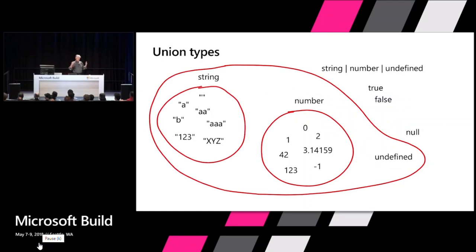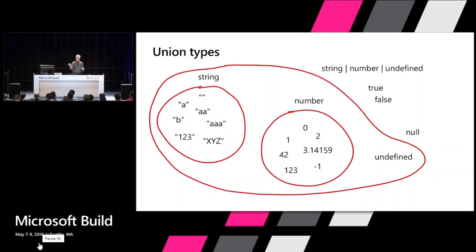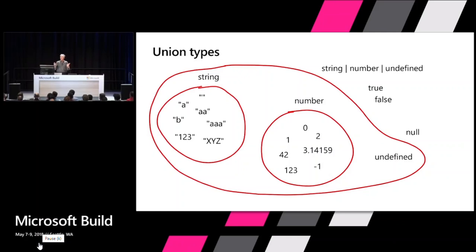We use union types in control flow based type analysis because we understand what JavaScript statement constructs do to types. For example, if I have a variable x whose type is string or number or undefined, and I say 'if (x)' — we know that construct removes the type undefined because that would not execute. This lets us narrow the union type down to string and number. This narrowing from control flow based type analysis is the deep enabler for non-nullable types and many other features in the language.